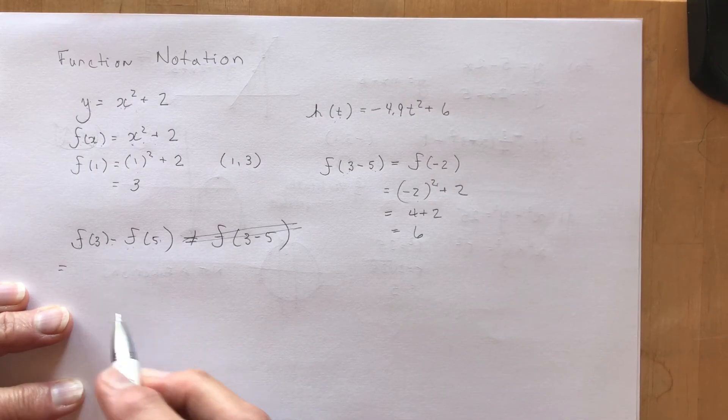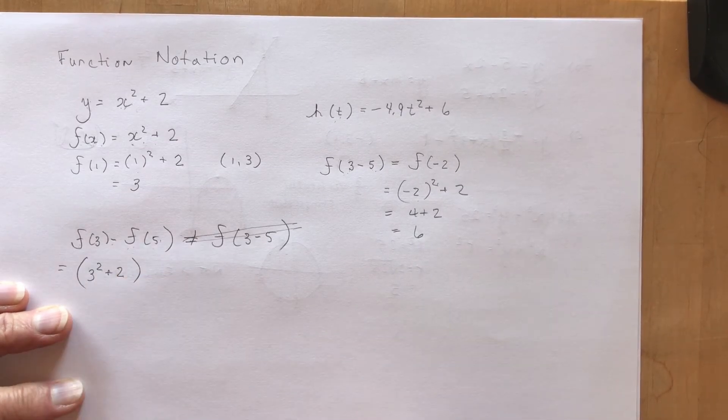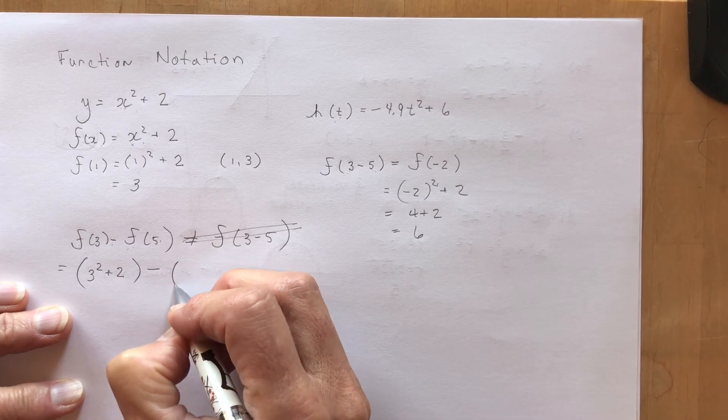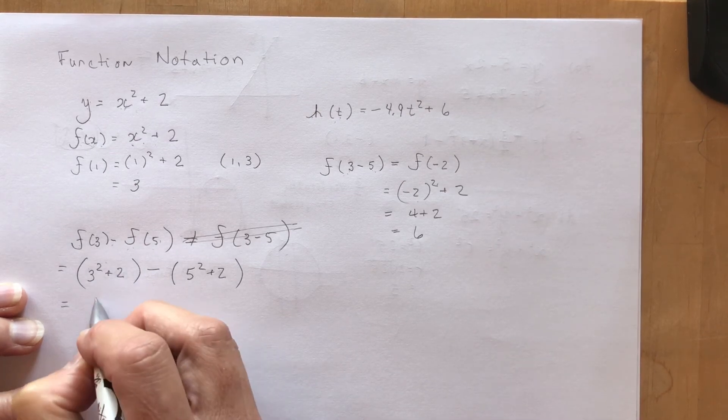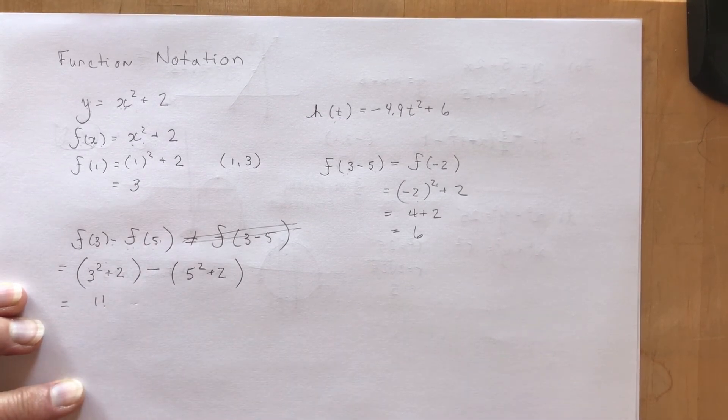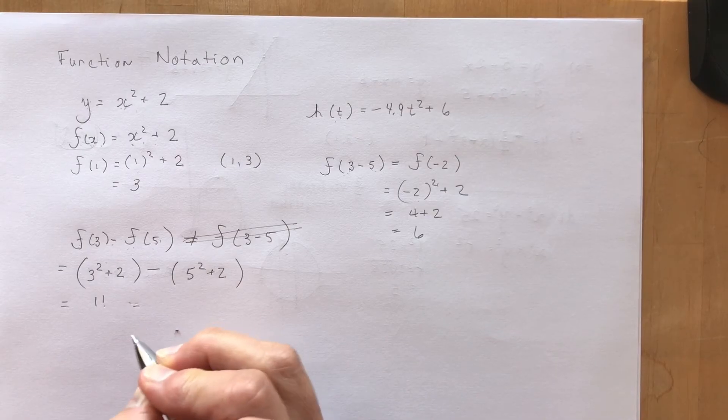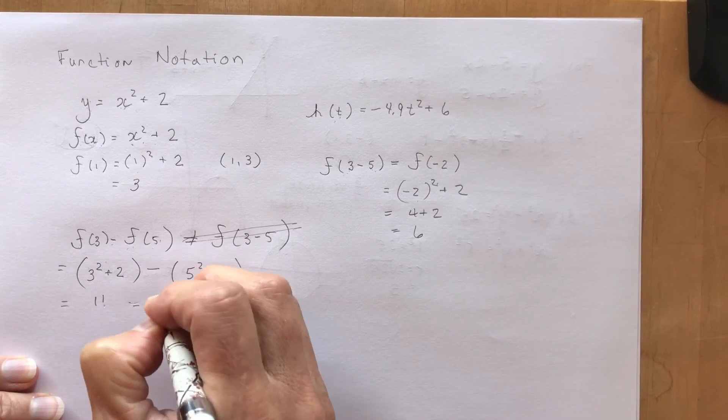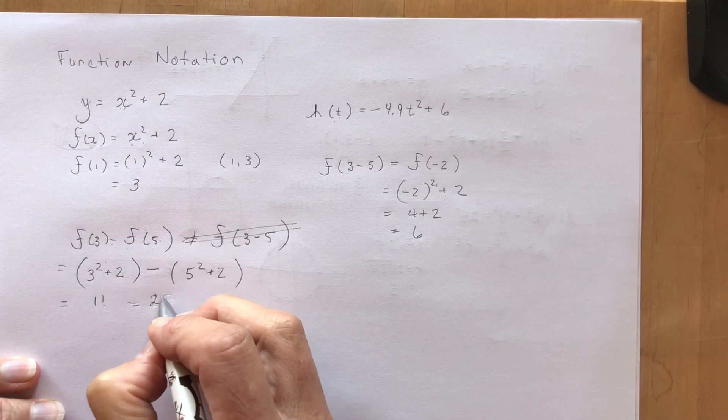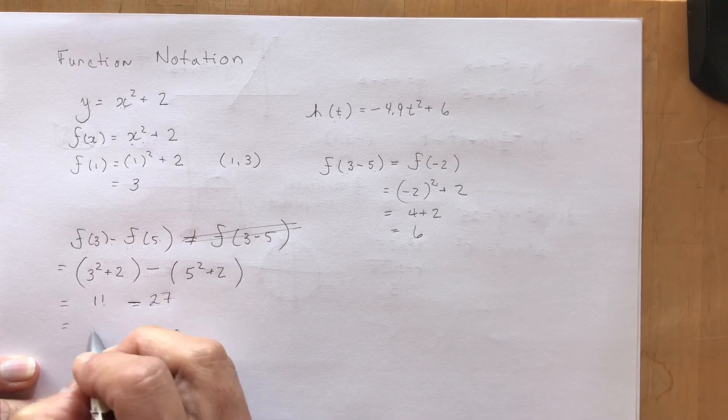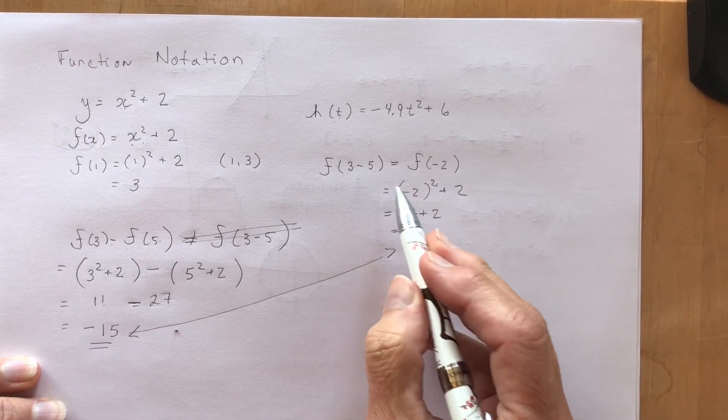So 3 squared is 9 plus 2 is 11, and 5 squared is 25 plus 2, that's 27. So 11 minus 27 is minus 15. So you can see that this is not the same thing as f at 3 minus 5. Those are some of the little questions they ask you in the homework.